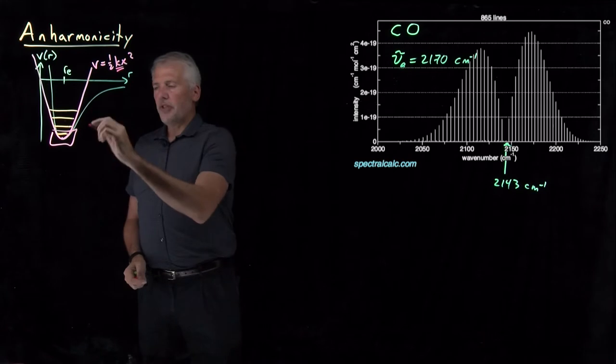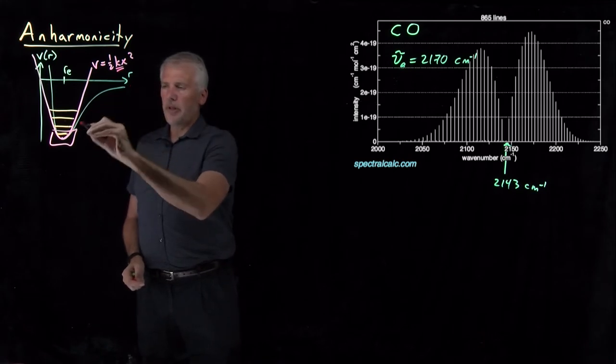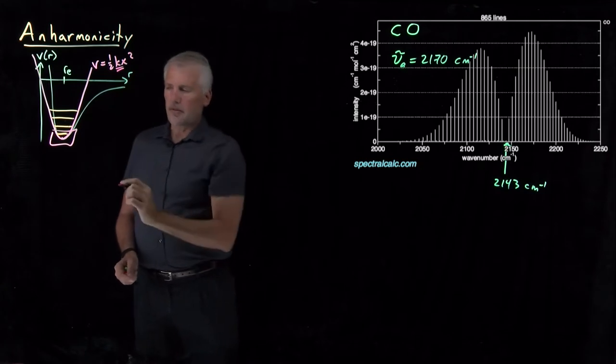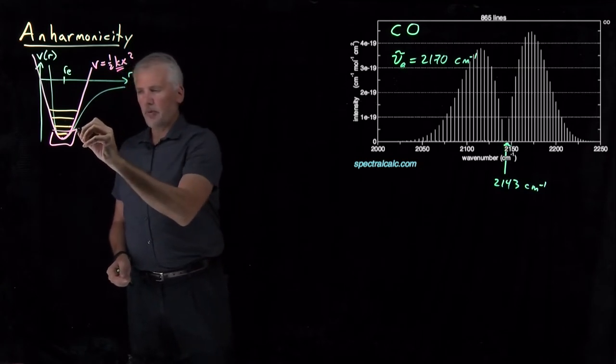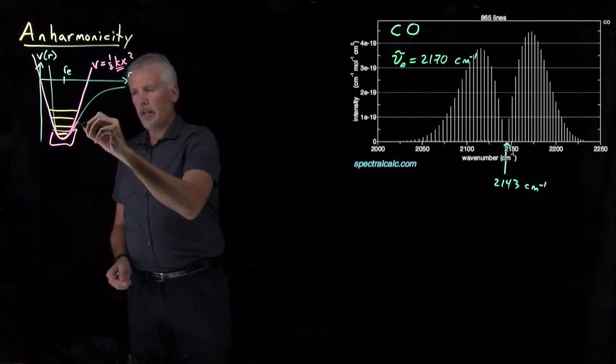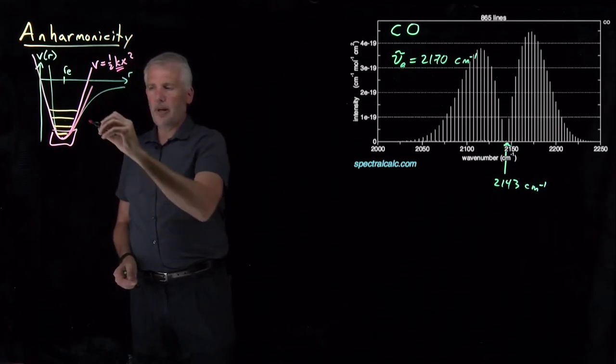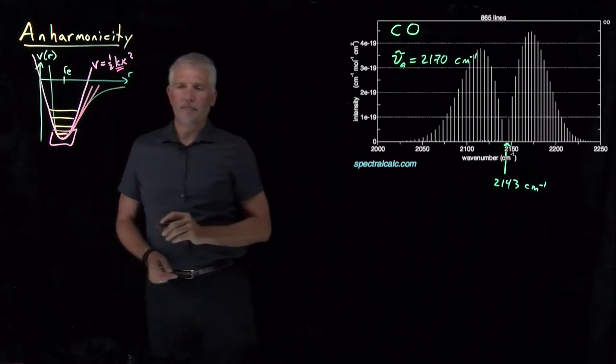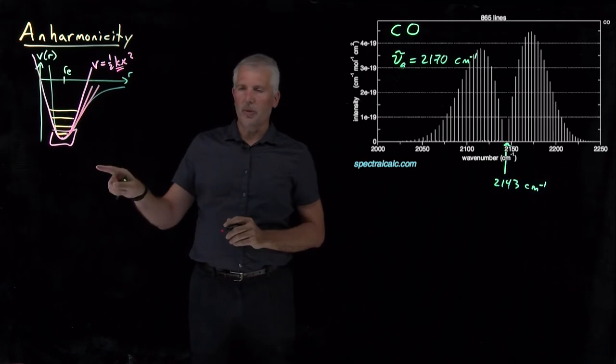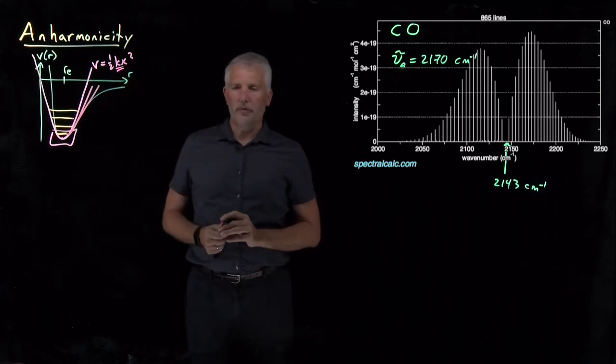You can see that as the energies go up, the real curve, this green curve, the real potential energy curve is getting softer and softer and softer. So as we go to higher energy levels, we might want a somewhat shallower parabola. So the further up this energy well we go, the smaller the value of k should be.